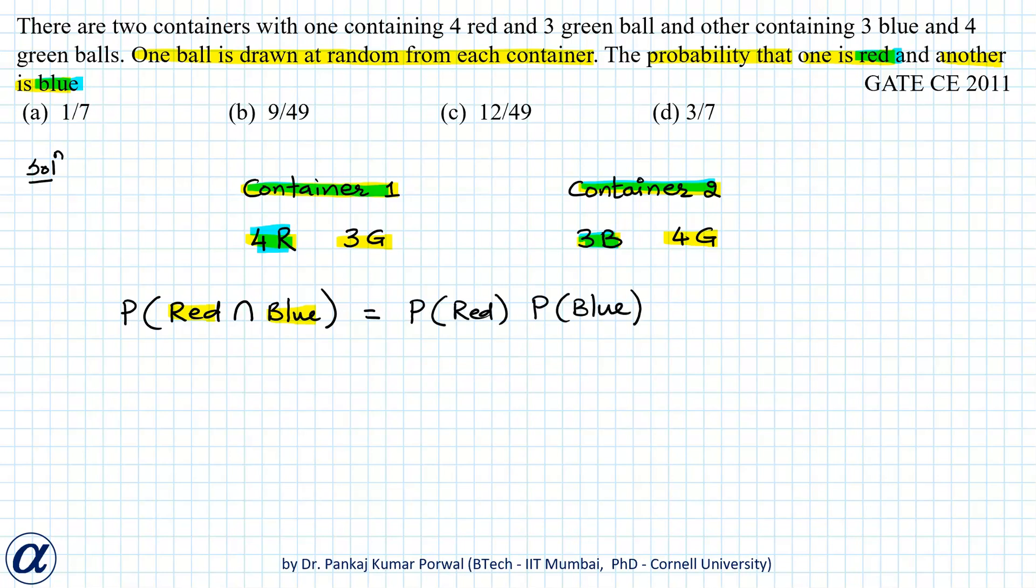Now the probability of drawing a red ball will be 4/7, because there are four red balls in container one and there are total seven balls. Into the probability of drawing a blue ball from container two will be 3/7, because there are three blue balls and total seven balls in container two.